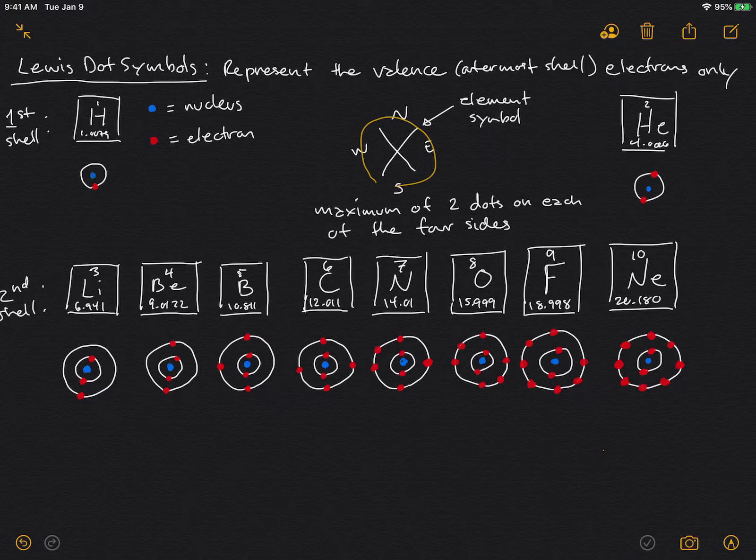If we go to the first shell, which corresponds with the first period in the periodic table, we see hydrogen, the simplest element, which has one proton. The nucleus is represented by a blue dot, and the electron is represented by the red dot, and each shell is a circle around the nucleus. With hydrogen, you see the nucleus and the first shell only has one electron. So you write the element symbol, and normally we start on the east side, but it really doesn't matter, this is just a convention. You place the one valence electron on one side, and that is the Lewis dot symbol for hydrogen.